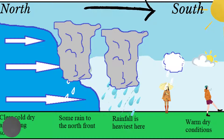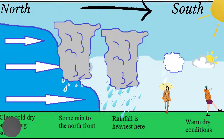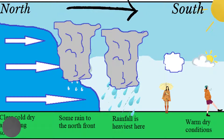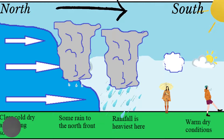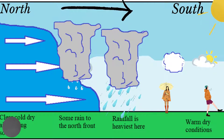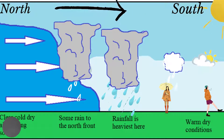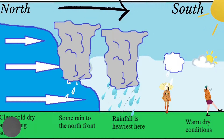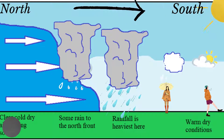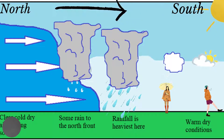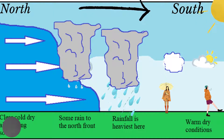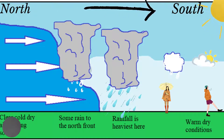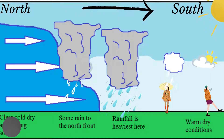As the cold front approaches, conditions become unstable with the sky becoming overcast. As the cold front passes, temperatures often begin to fall, and cumulonimbus clouds will start to produce moderate to heavy rainfall. After the cold front has passed, the temperatures will get even lower and the winds will begin to blow from the north.